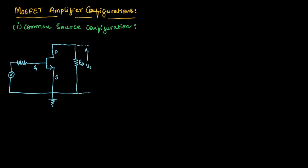We will be measuring the output voltage V0 at the drain terminal. At the gate terminal, we will measure the input, where the resistor is R signal and the input is V signal. This is the common source configuration. For each configuration, the first step is to find the small signal model.